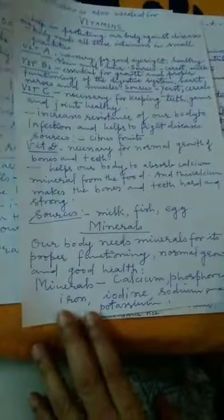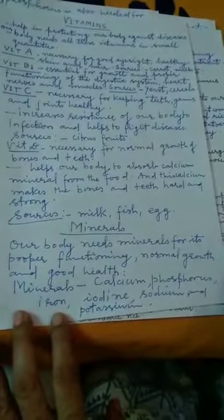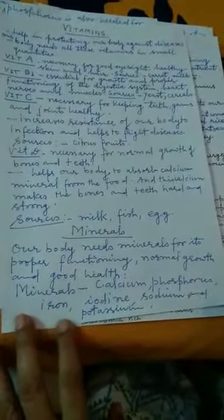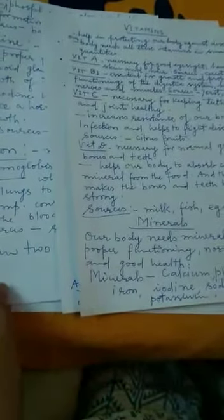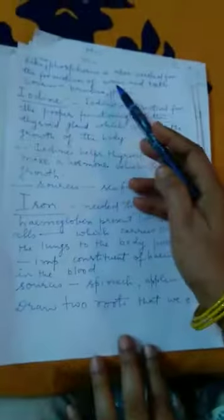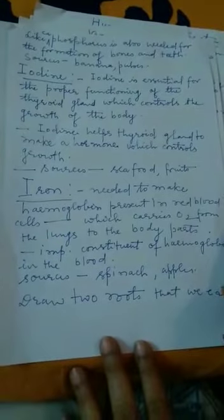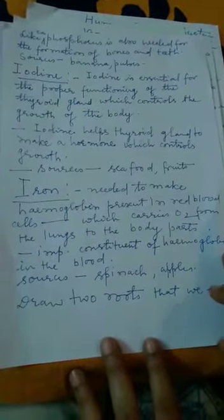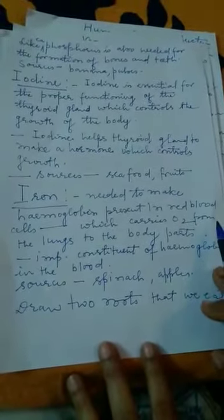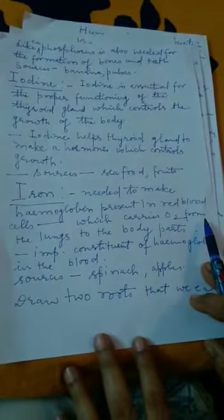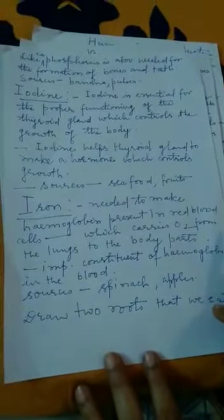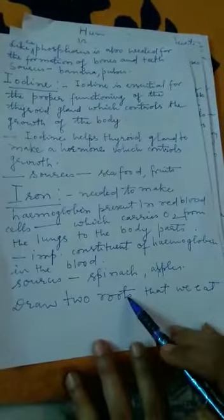Our body needs minerals for proper functioning, normal growth, and good health. Minerals include calcium, phosphorus, iron, iodine, sodium, and potassium. Calcium and phosphorus are needed for the formation of bones and teeth — their sources are bananas and pulses. Iodine is essential for the proper functioning of the thyroid gland, which is an endocrine gland that controls growth. Iodine helps the thyroid gland produce the hormone thyroxine, which controls growth.